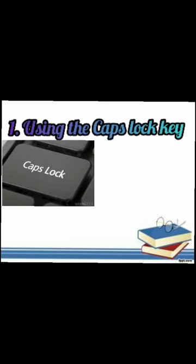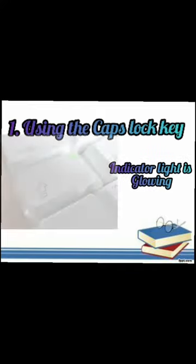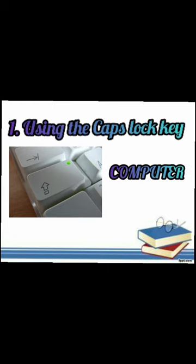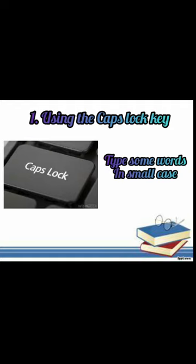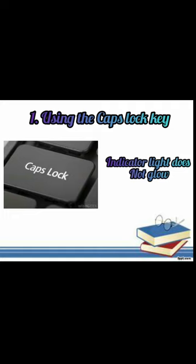First, using the Caps Lock key. To type an alphabet in capital, press the Caps Lock key once and ensure that the Caps Lock indicator light is glowing. For example, if you type 'computers', it will appear in capital letters on the screen. Similarly, if you want to type in small case, press the Caps Lock key once again and ensure that the indicator light does not glow. Now if you type 'computers', the word will appear in small letters on the screen.